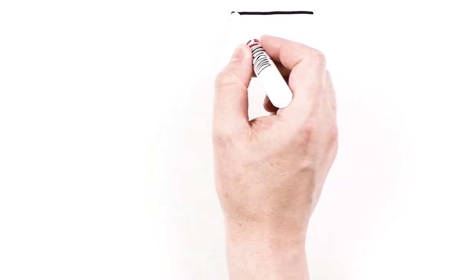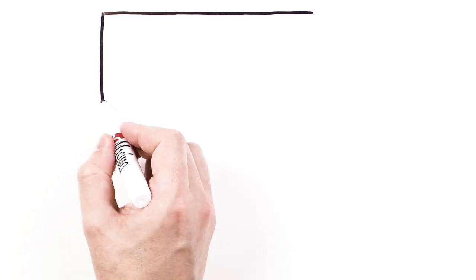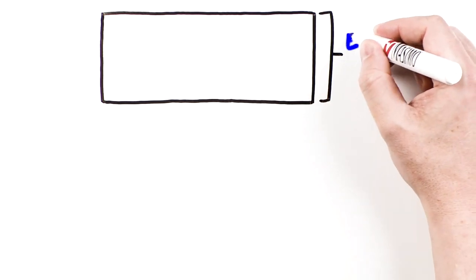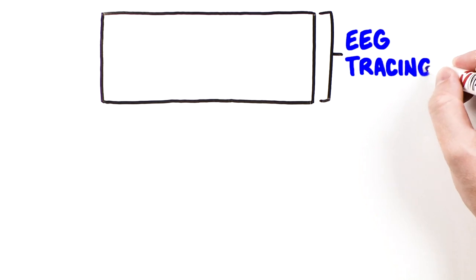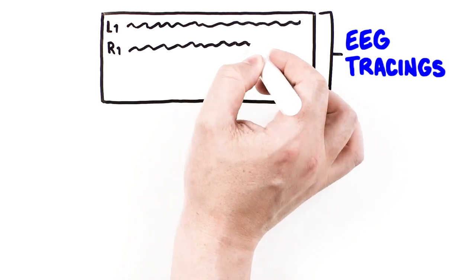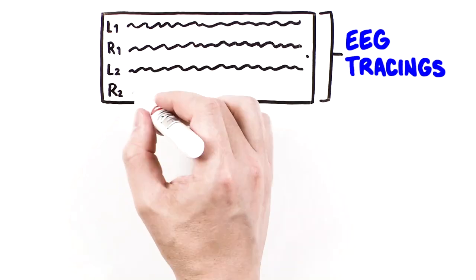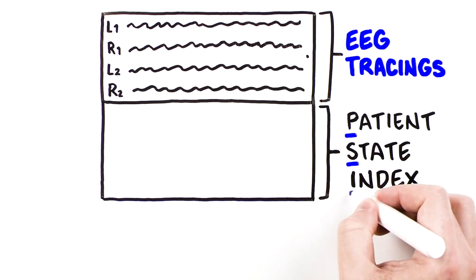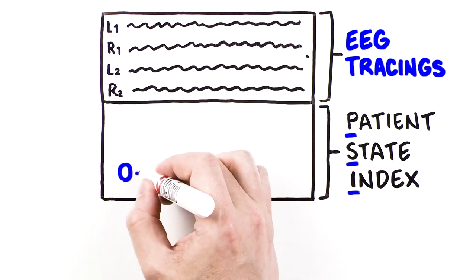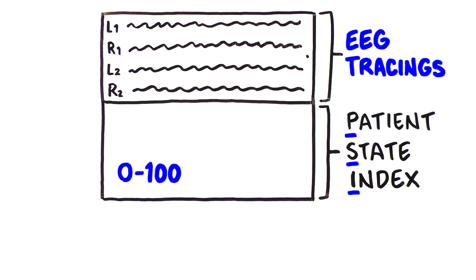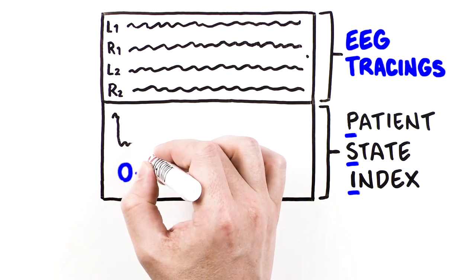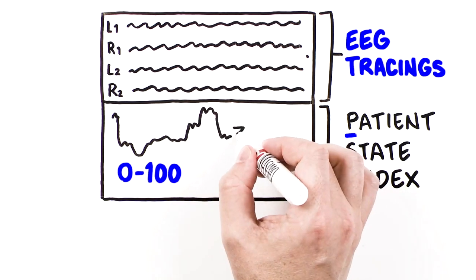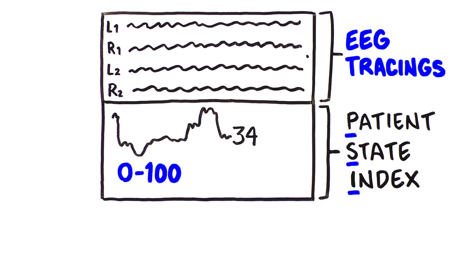The SEDLINE data displayed on Root is divided into three sections. First, at the top of the screen, you'll find EEG tracings that represent the EEG activity on both sides of the brain simultaneously. The Patient State Index, or PSI, is a numeric value between 0 and 100 related to the anesthetic depth of your patient. This number is derived from SEDLINE's computational analysis of EEG patterns and features.